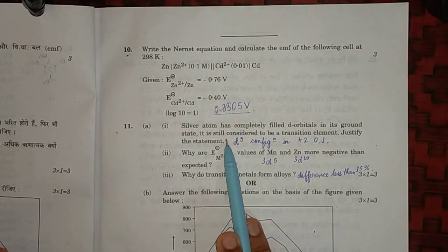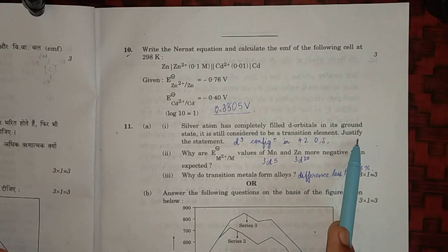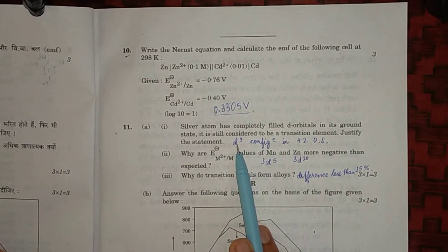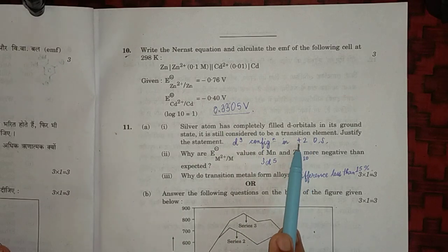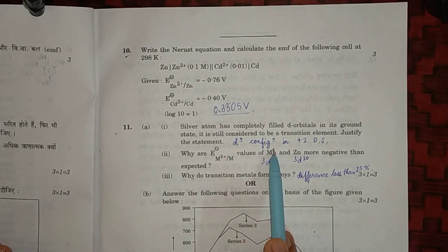Question 11: silver atom has completely filled d orbital in its ground state, it is still considered to be a transition element, justify the statement. Because in its +2 oxidation state, silver has d9 configuration, so therefore it is considered a transition element even if it has a fulfilled orbital in ground state.